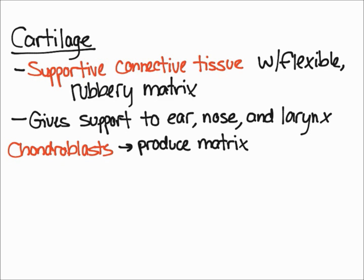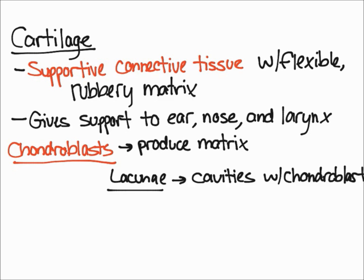The cells that actually produce the matrix are called chondroblasts, and they're really important to remember. These chondroblasts produce matrix, and they produce so much until they surround themselves and then become trapped in little cavities. These little cavities are called lacunae.